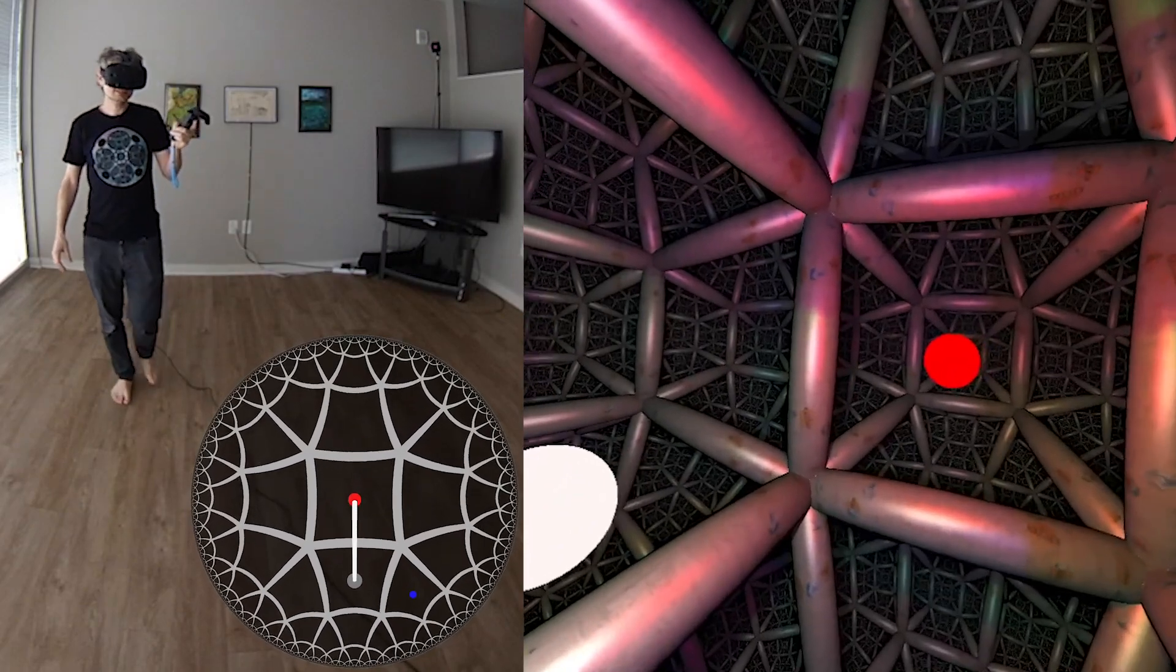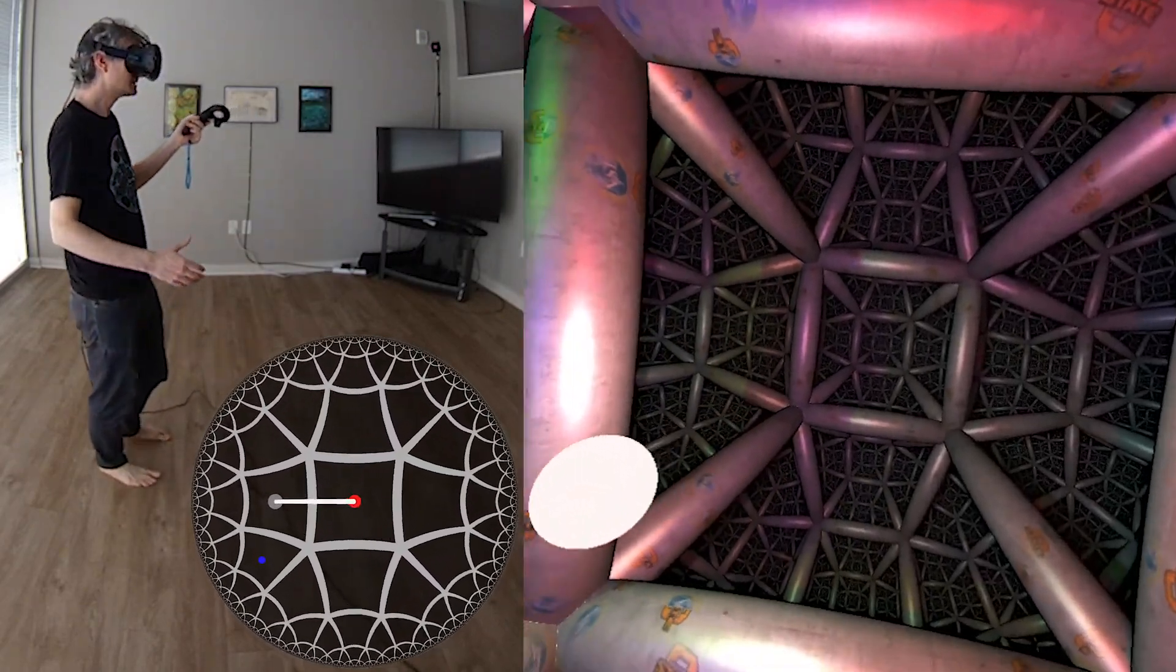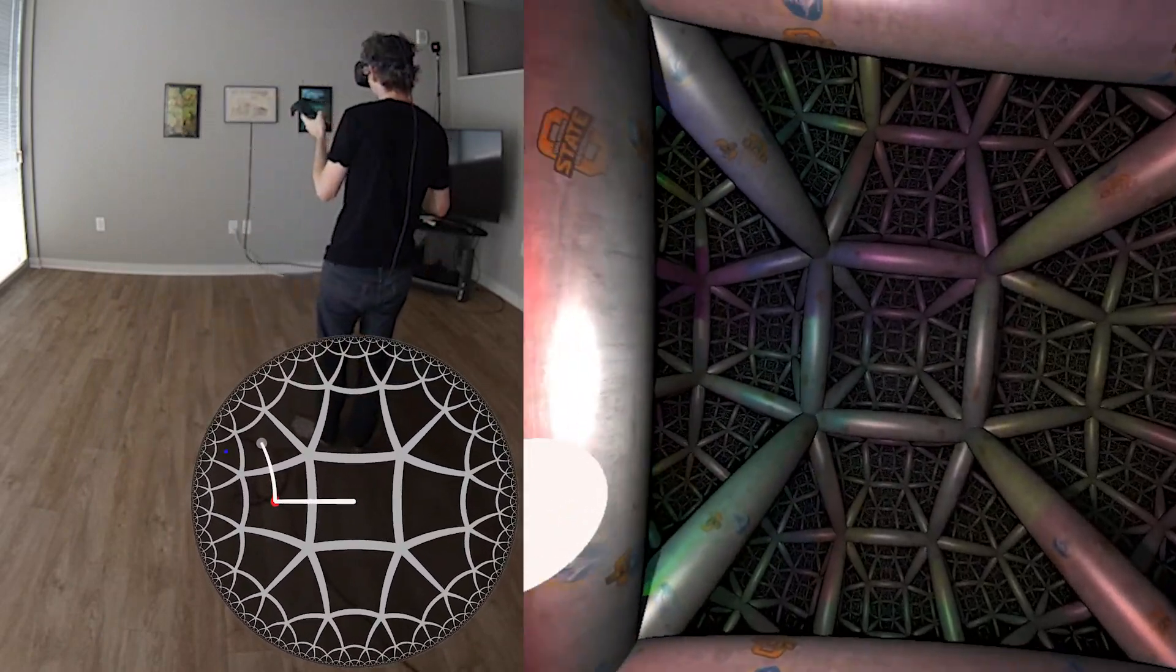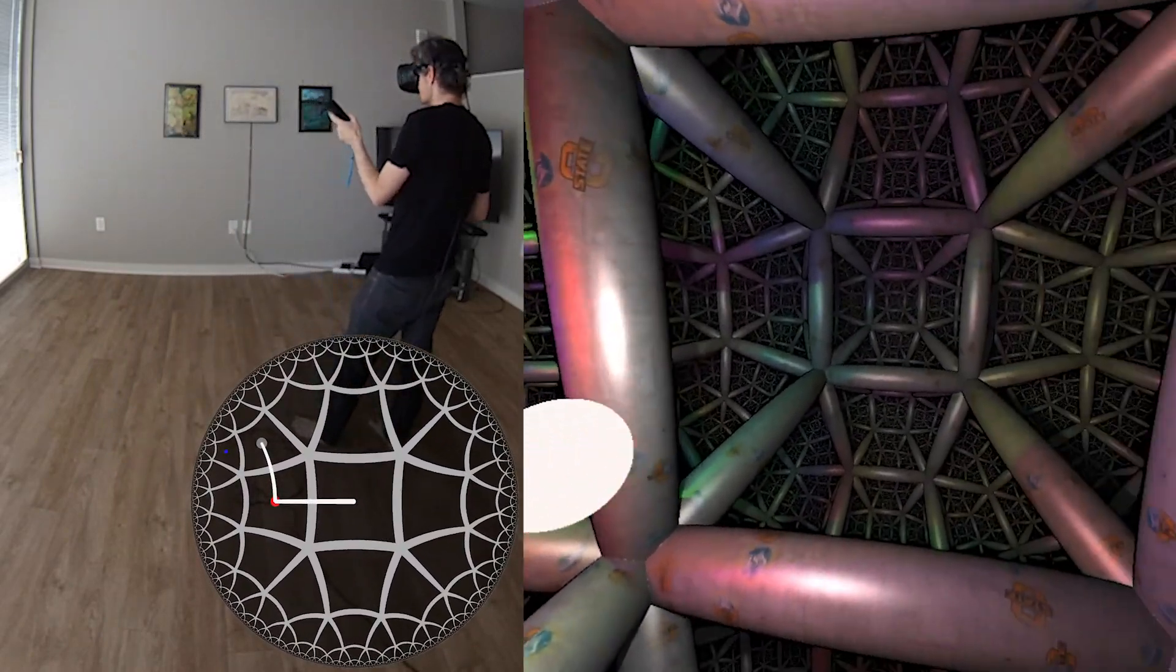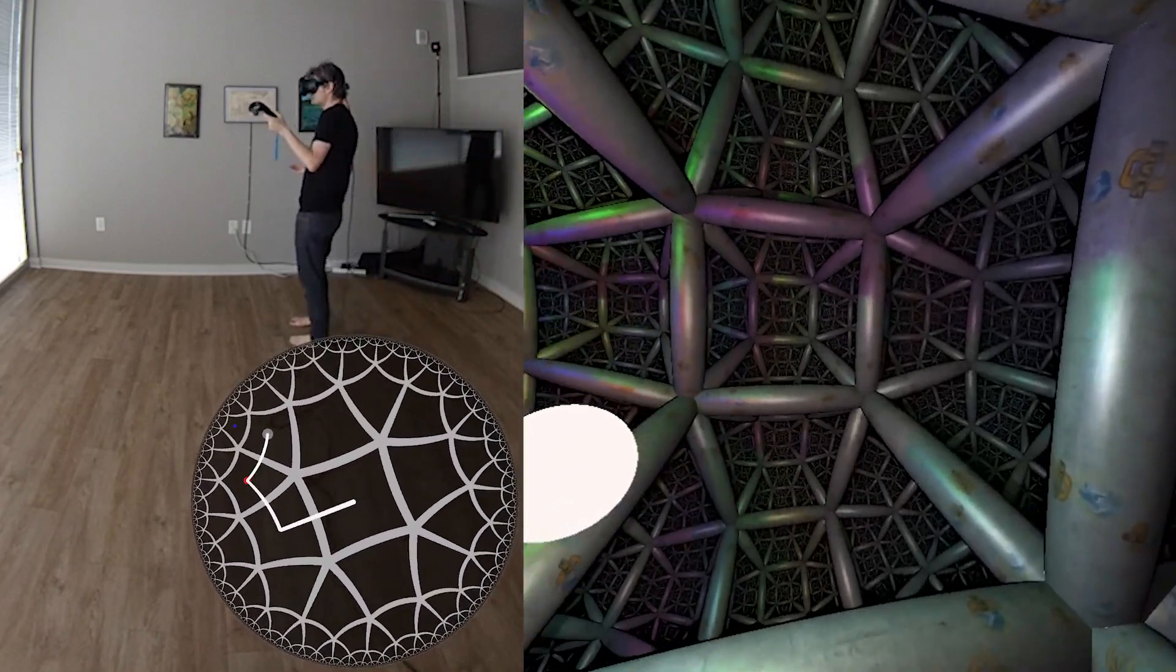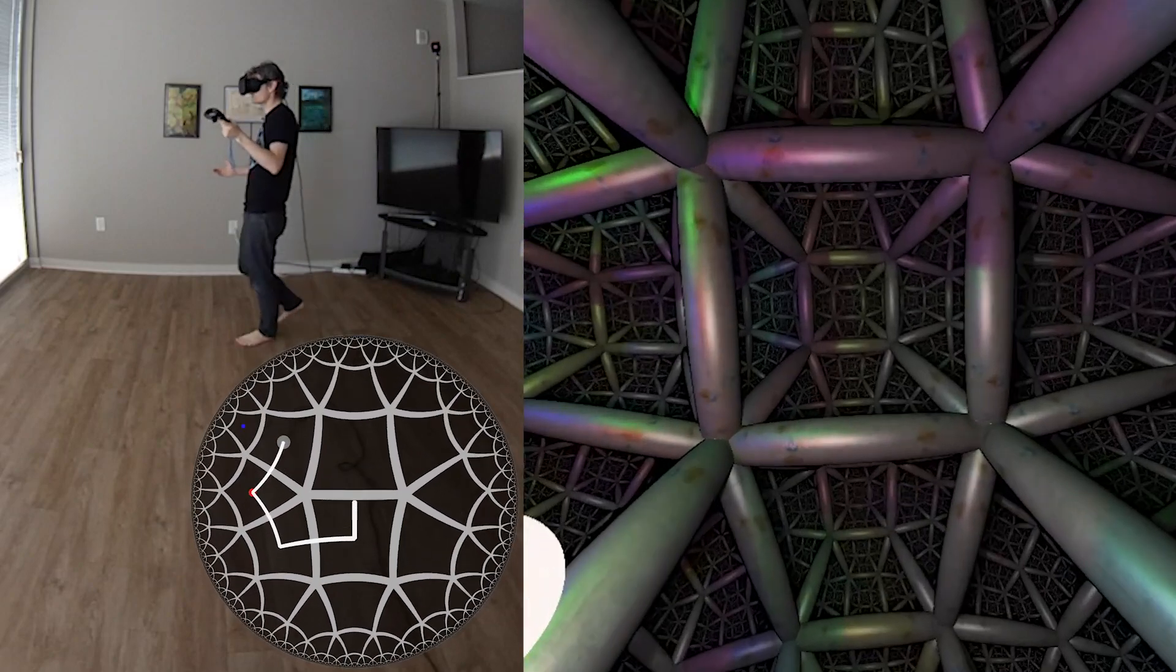This world is curved a little bit like how space is curved near a black hole. Light rays travel along strange curved paths. There's going to be a mismatch between where I end up in the real world and where I end up in the virtual world.